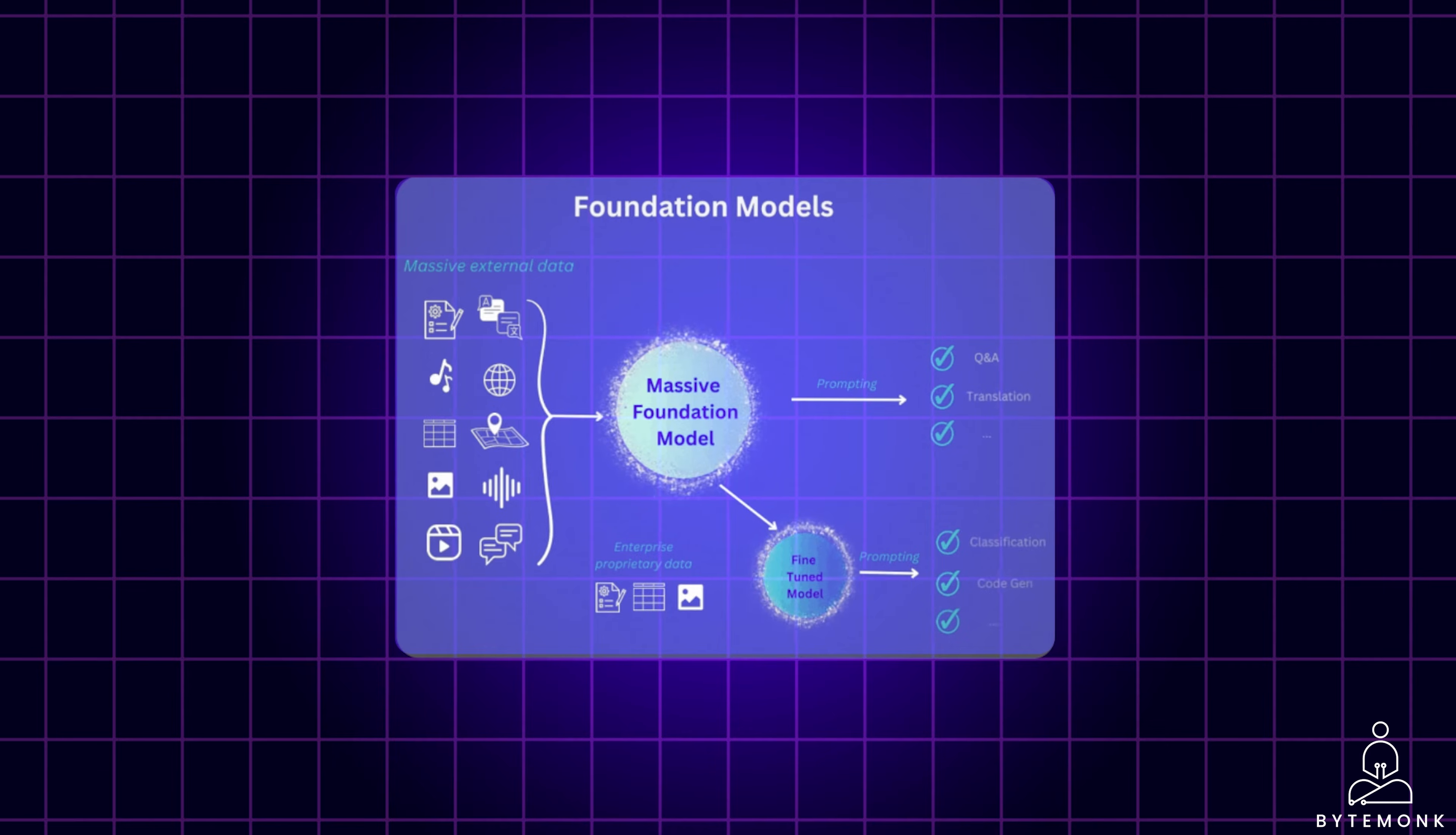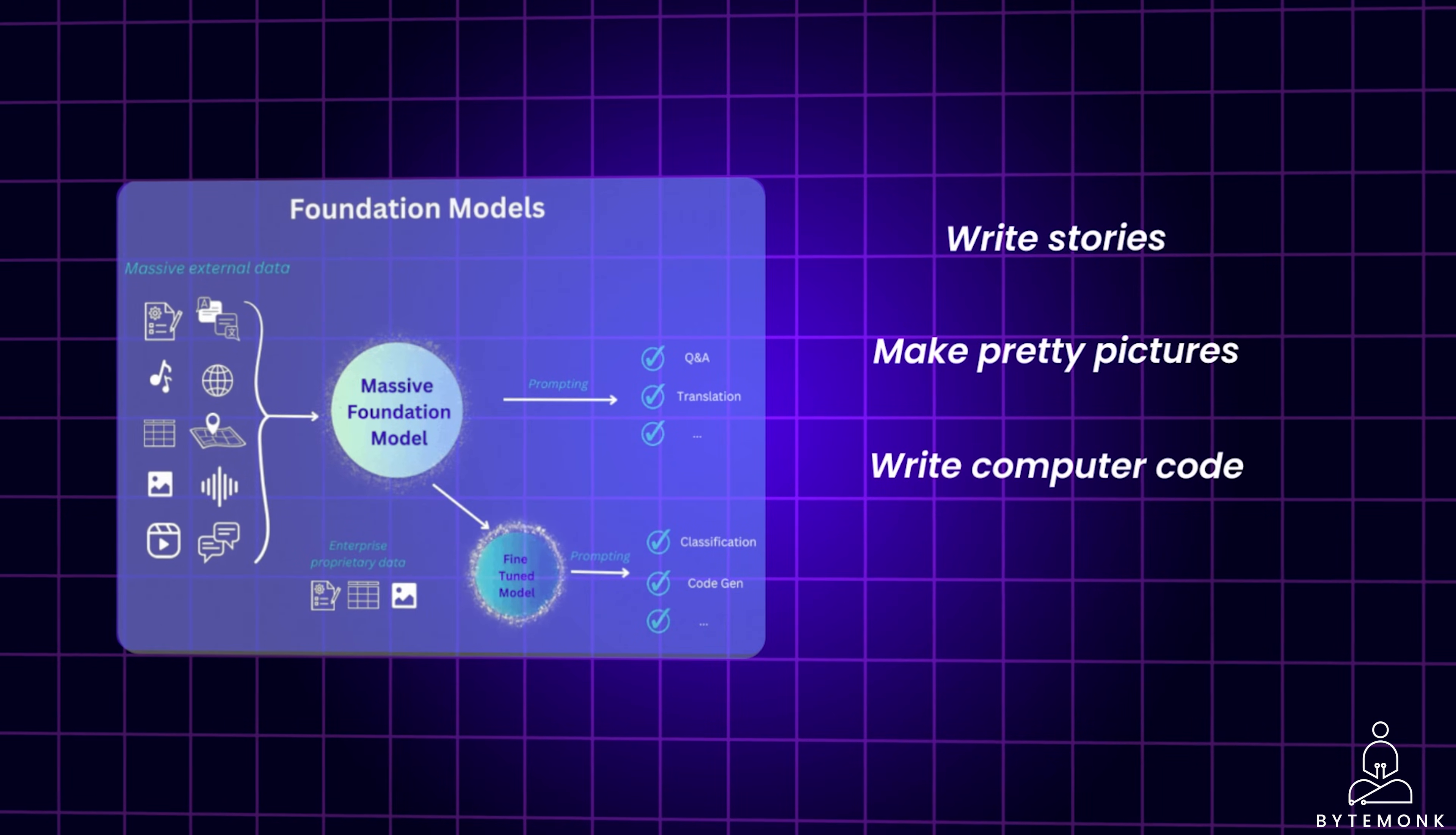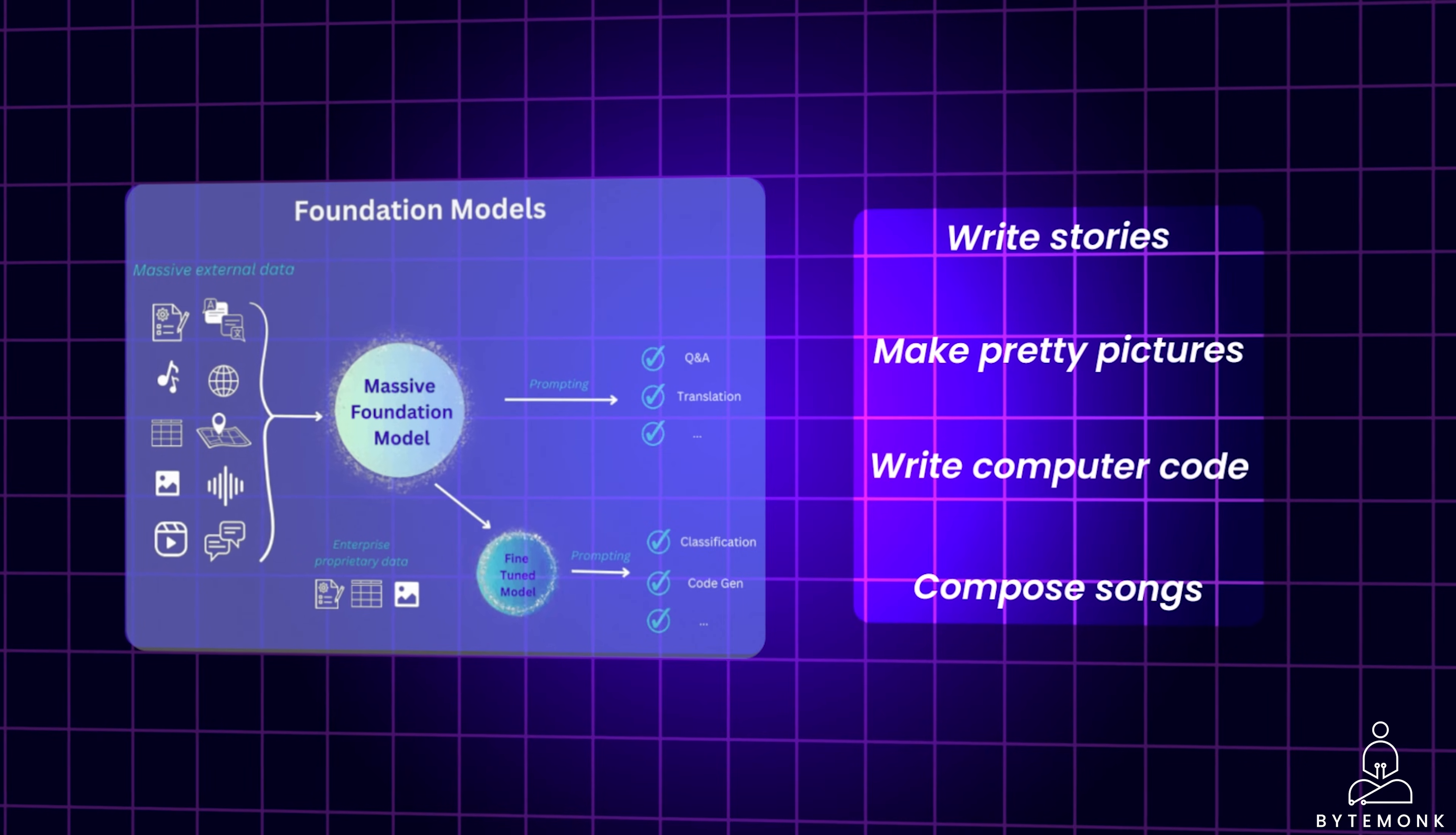New AI programs can do amazing things like writing stories, making pretty pictures, write computer code, and even compose songs, thanks to foundation models.